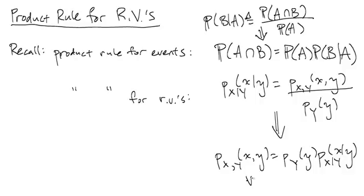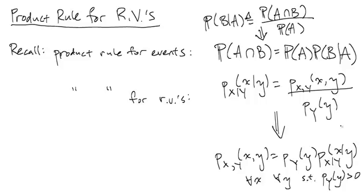This holds for all values of little x that random variable X can take on, and for all values of little y that random variable Y can take on, and we are restricting ourselves to when the probability of little y is greater than zero. Otherwise, we would be dividing by zero here.